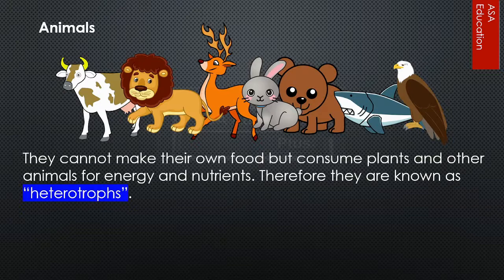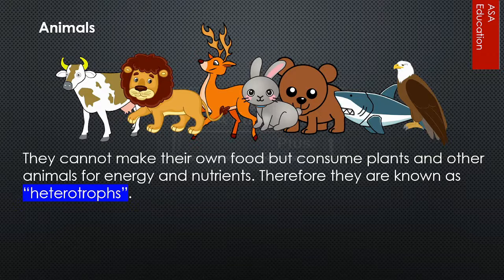Animals cannot make their own food, but consume plants and other animals for energy and nutrients. Therefore, they are known as heterotrophs.